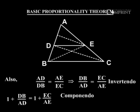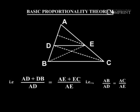Invertendo: 1 + DB/AD = 1 + EC/AE. Componendo: (AD + DB)/AD = (AE + EC)/AE, that is AB/AD = AC/AE.